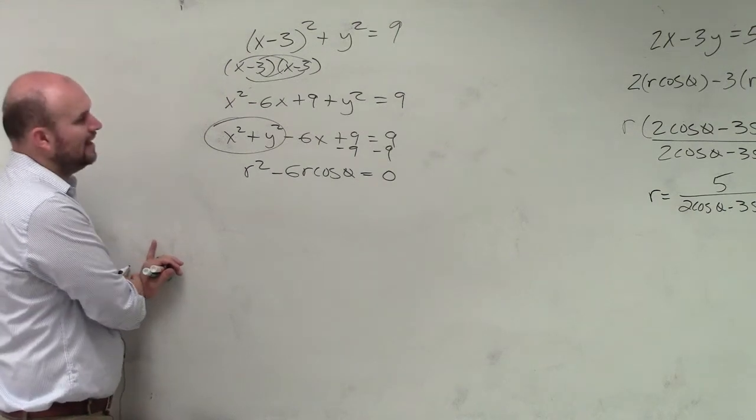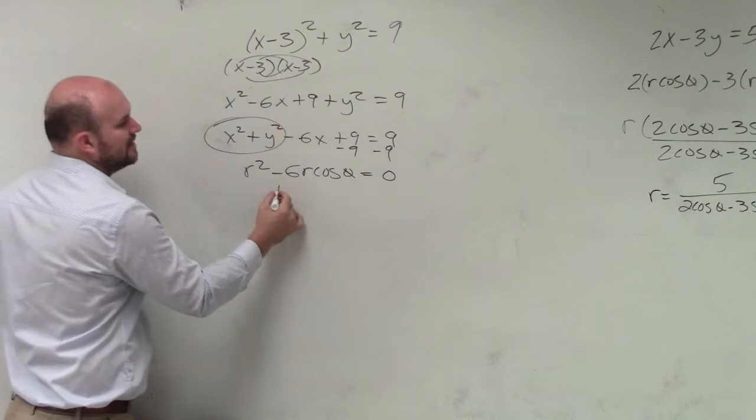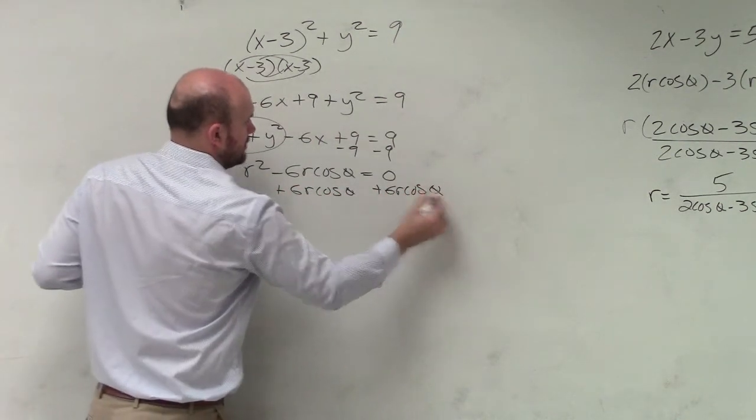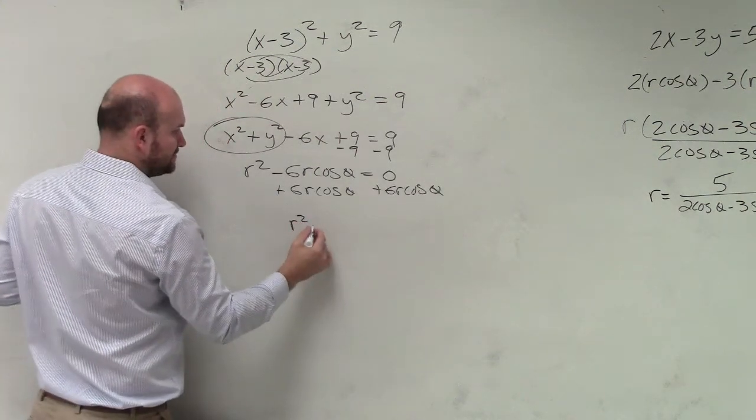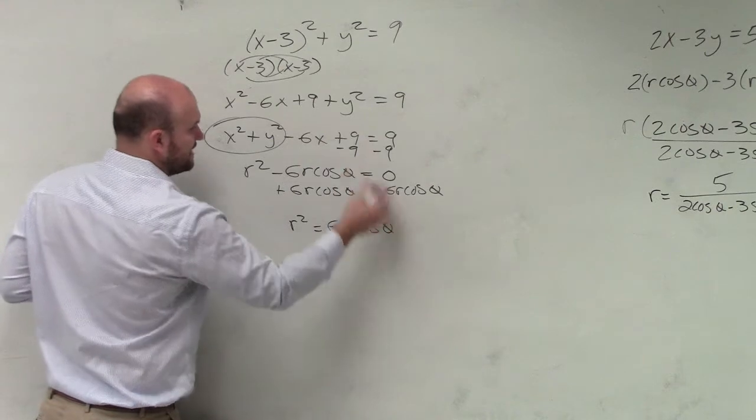Okay. Now, we could still solve this for r if we subtracted a 6r cosine of theta. Therefore, we'd have an r squared equals 6r cosine of theta.